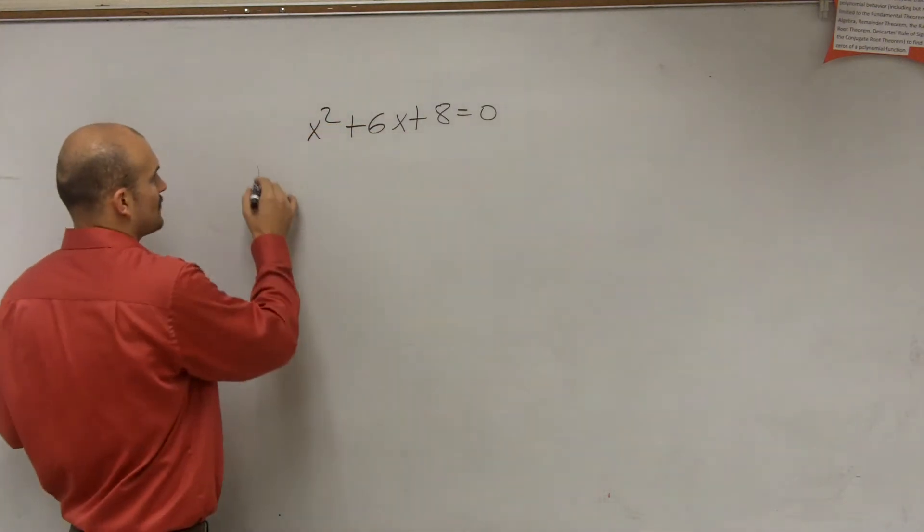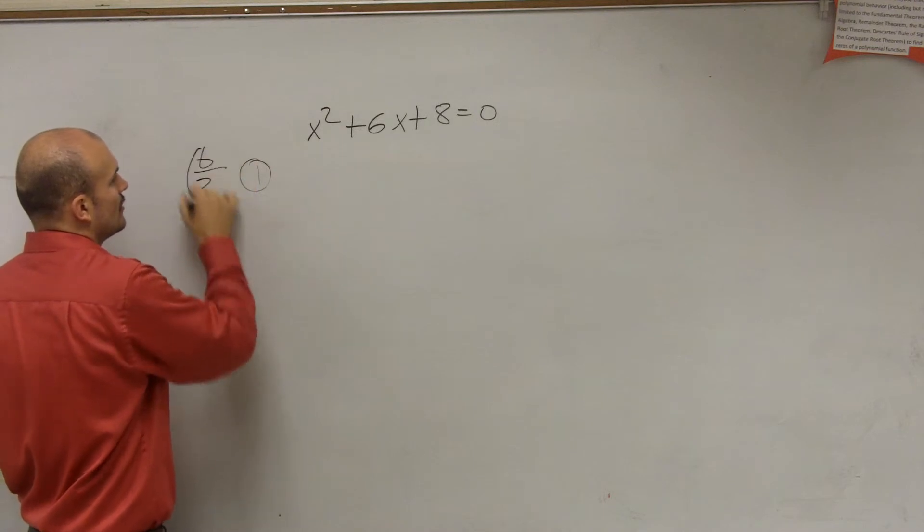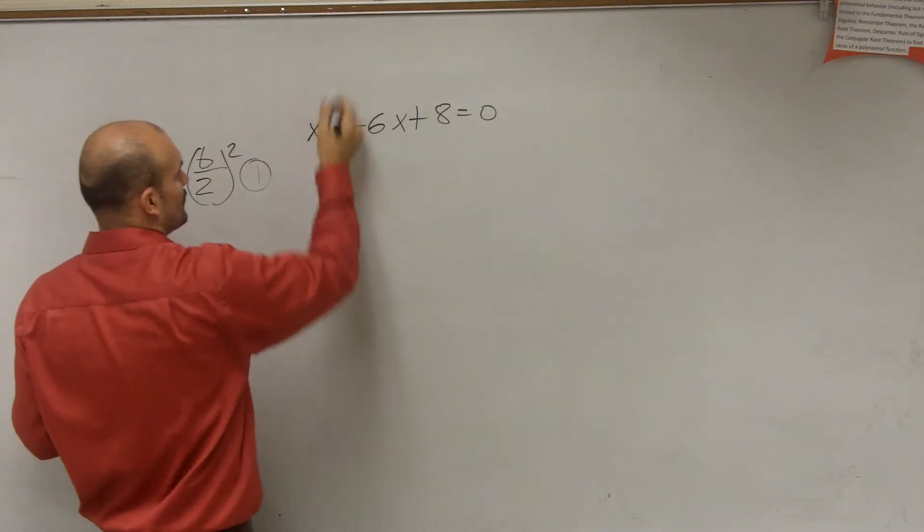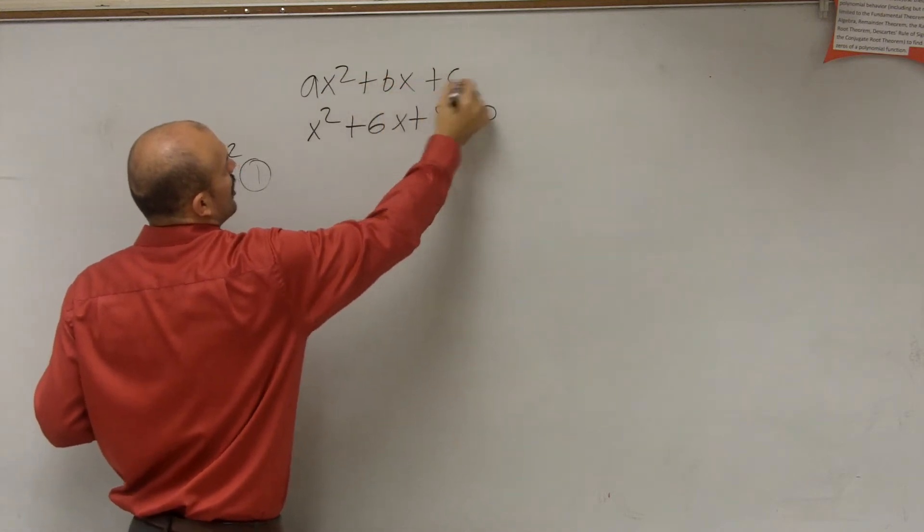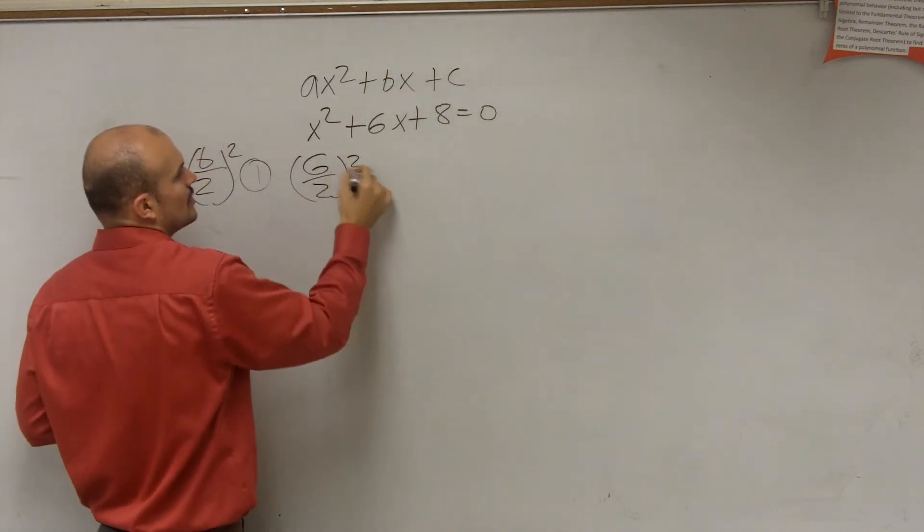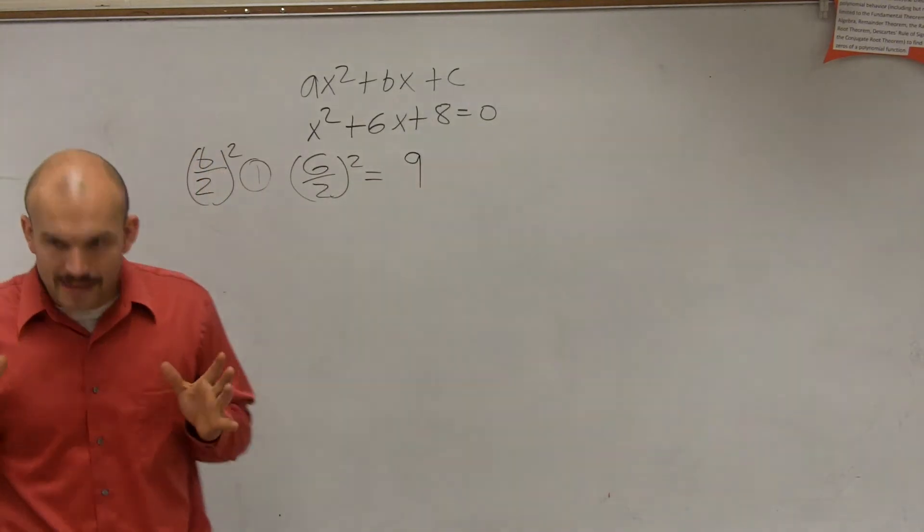So again, I'll go through the steps. The first step is to take b divided by 2 and square it. So for this problem, our b is 6. So 6 divided by 2 squared equals 9.